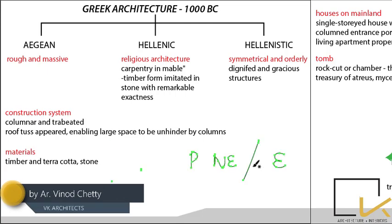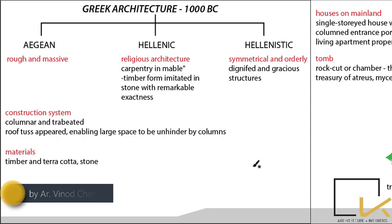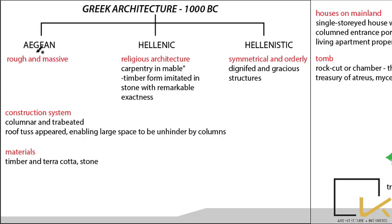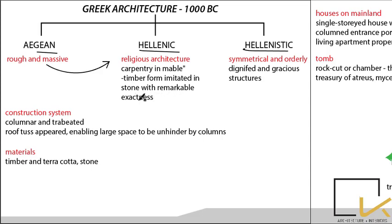Greek architecture was classified into three periods. The first was Aegean, second was Hellenic, and third was Hellenistic. Aegean was rough and massive. Hellenic was more about religious architecture — timber was imitated with stone with remarkable exactness, so stone was used to get the form like timber.